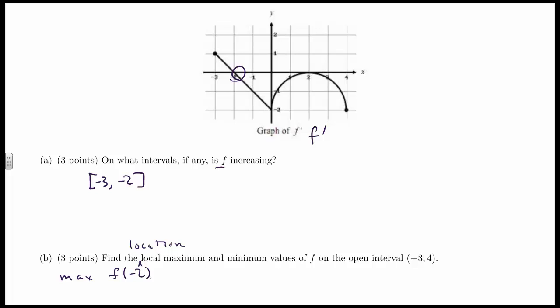Are there any minimum values? Well, do we see any places where it goes from a negative value to a positive value? And the answer is no. So this is the only thing that we can do. We can know that there's a max at x equals negative two. The local max is f of negative two.